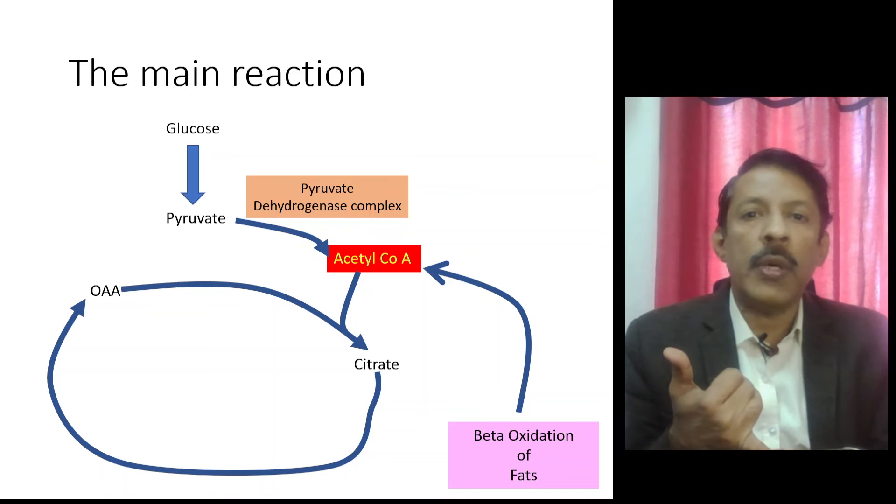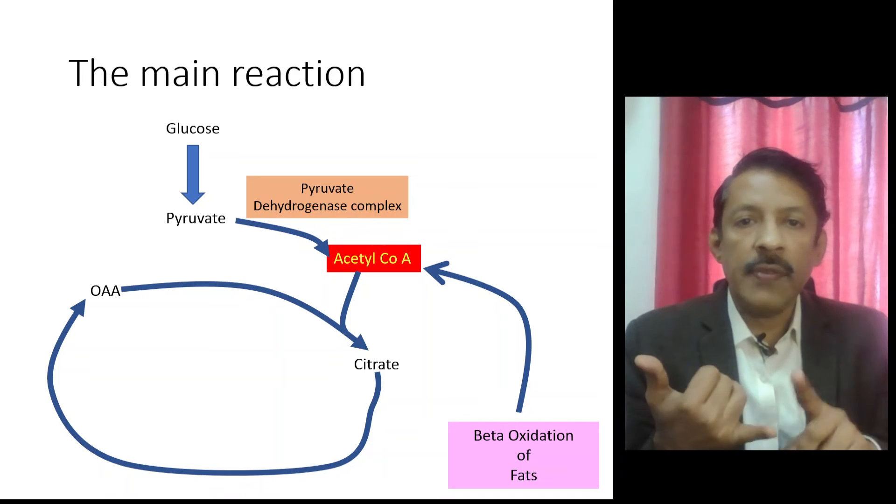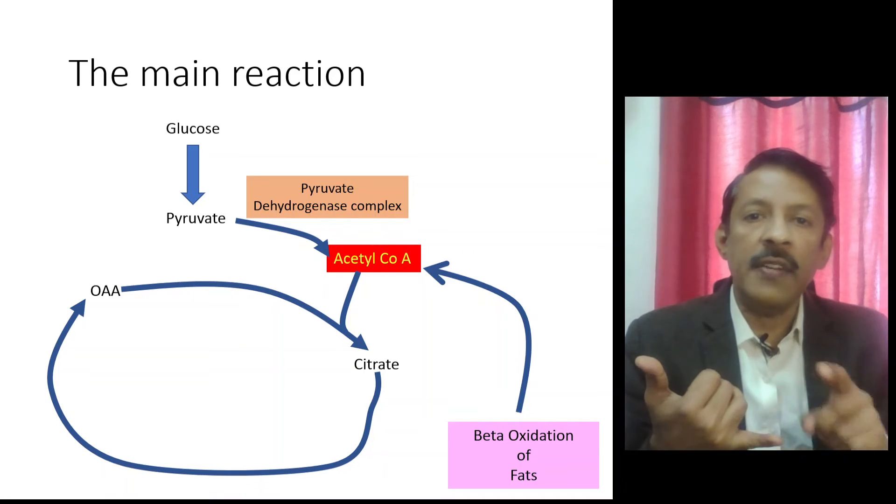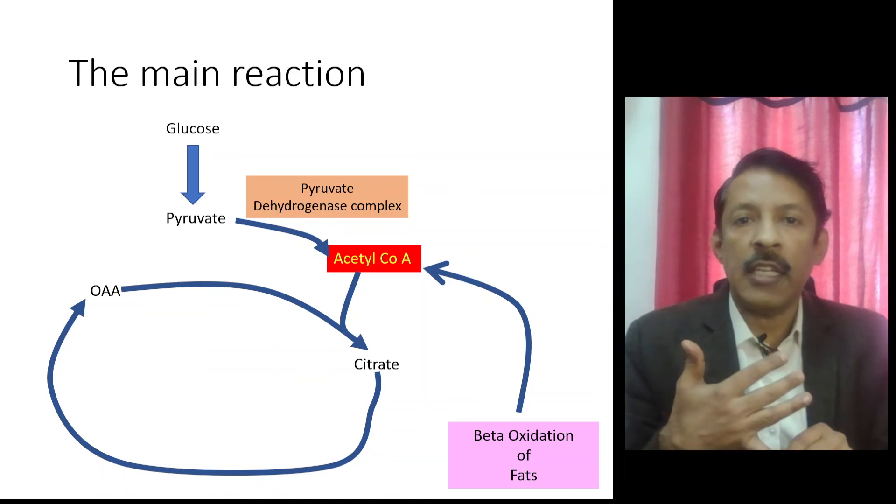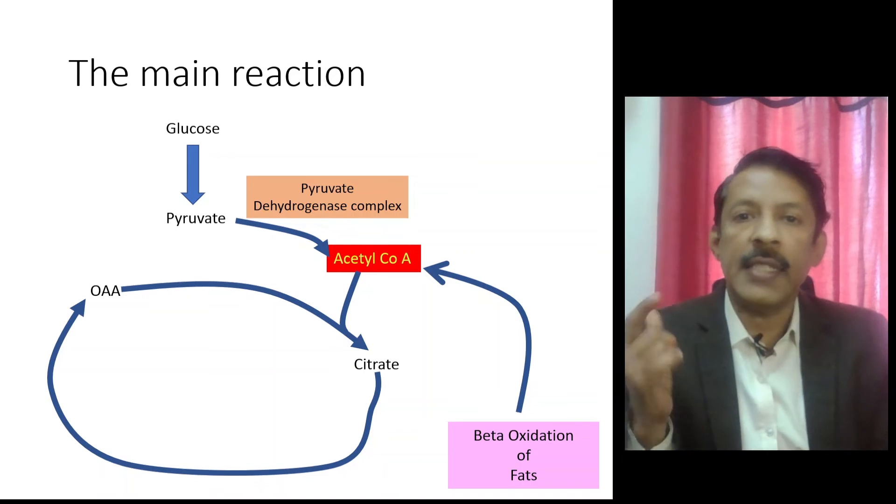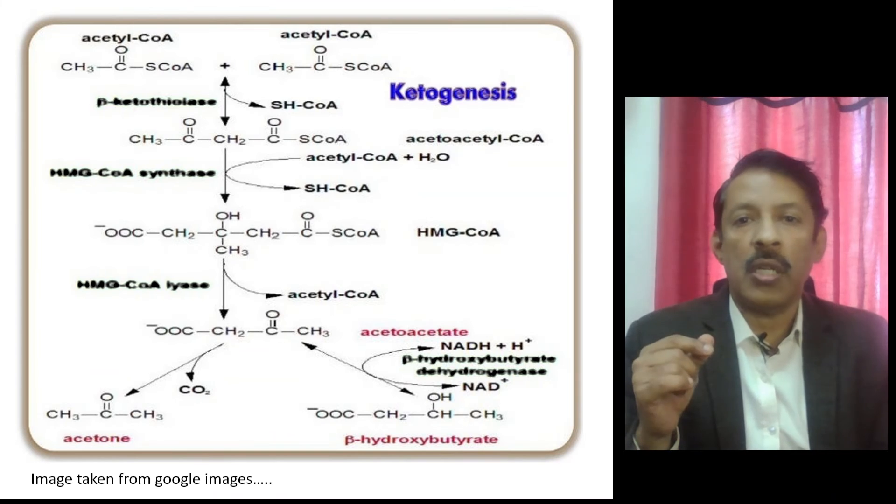Now we have excess acetyl coenzyme A and this excess acetyl coenzyme A does not have any further path to go because the TCA cycle has been blocked, and that is the time ketone body formation occurs.